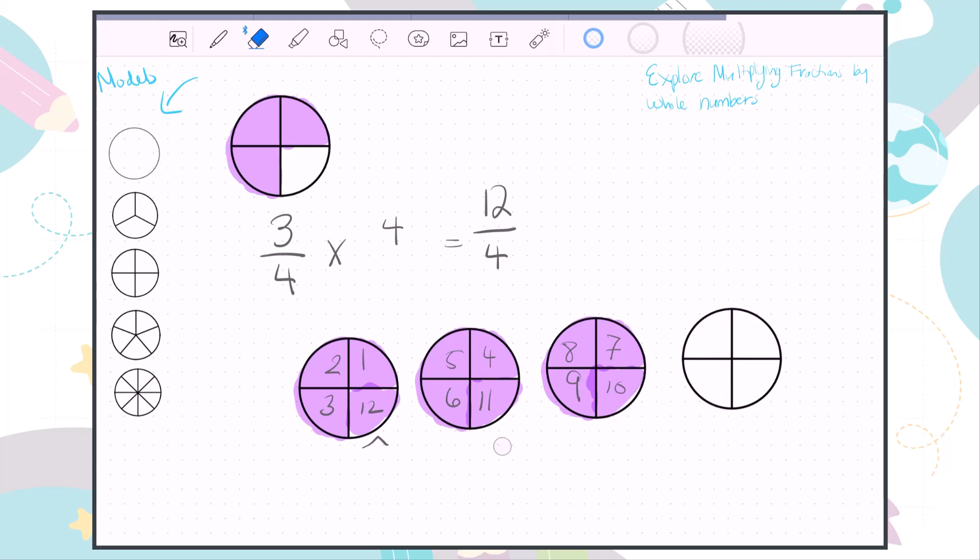Let's just clean this up a little bit. So you'll notice that 12/4 is also equal to three wholes. So we've just multiplied by a non-unit fraction. We've multiplied 3/4 by 4 and then reduced down so that we have a simpler answer.